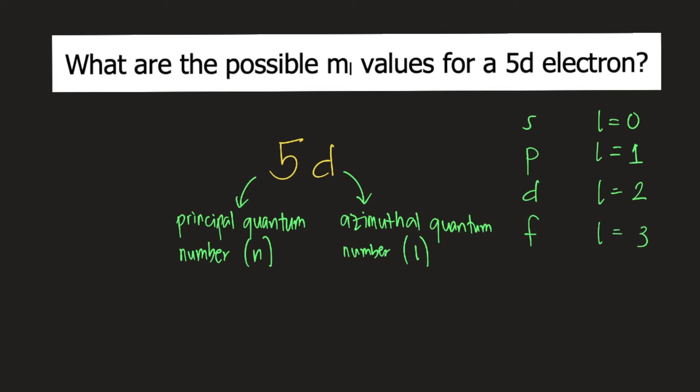So in this case, for a 5D electron, the azimuthal quantum number is 2.